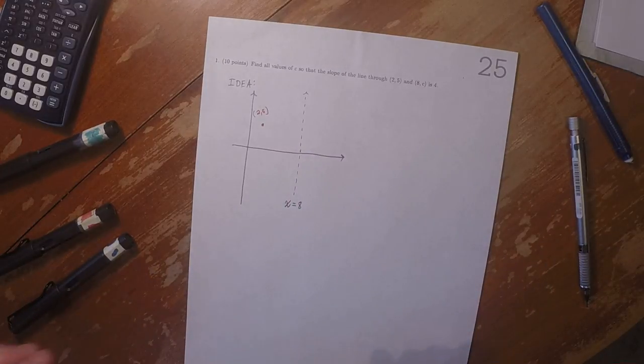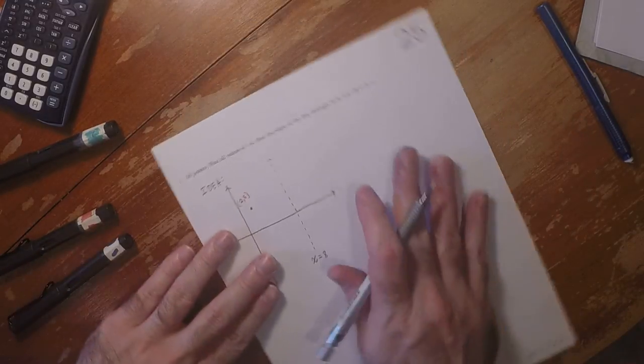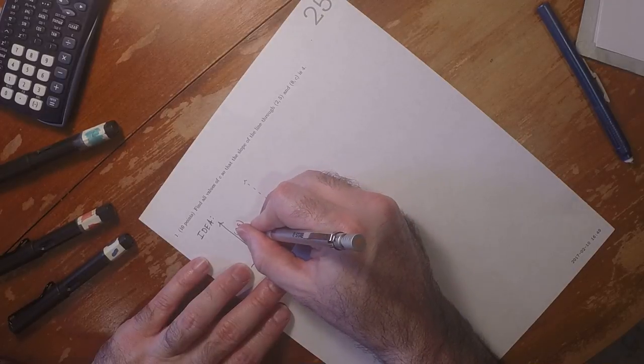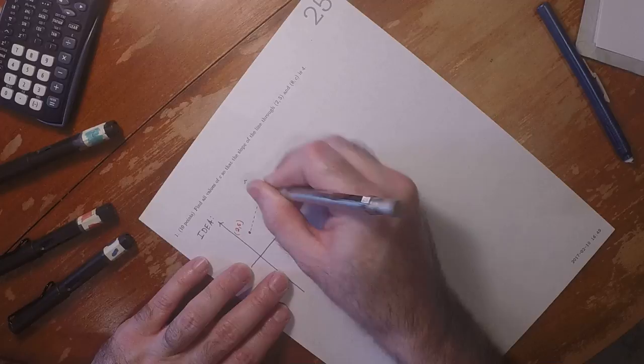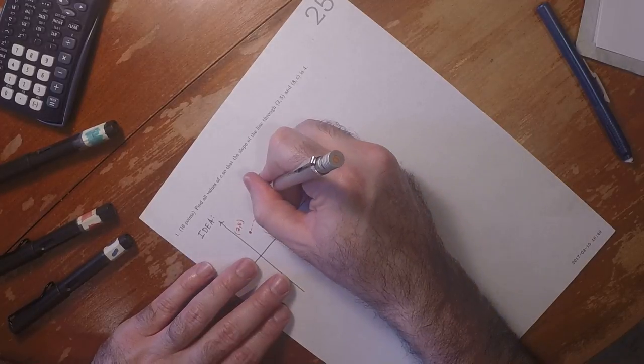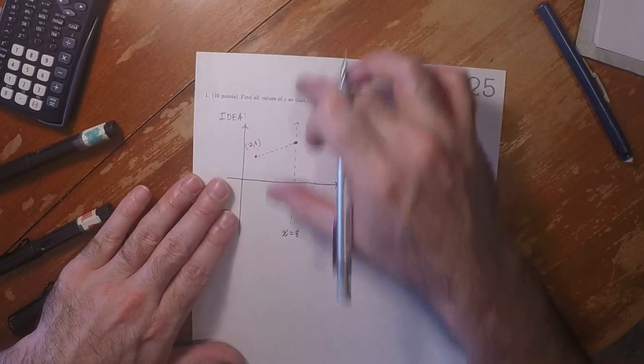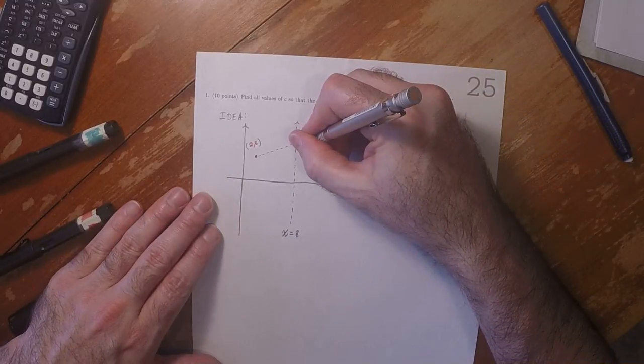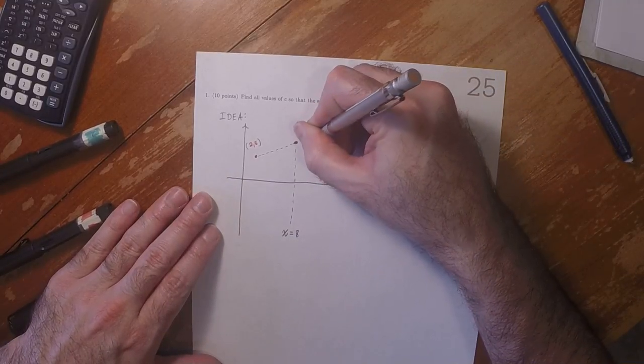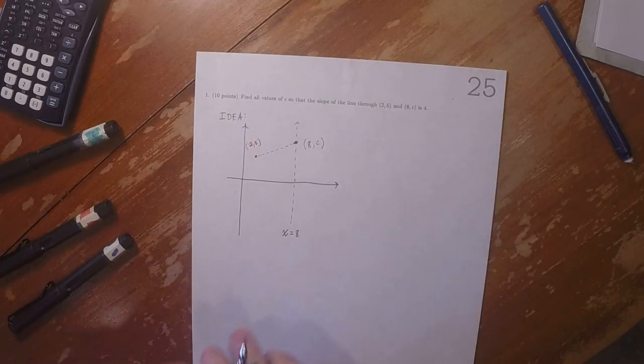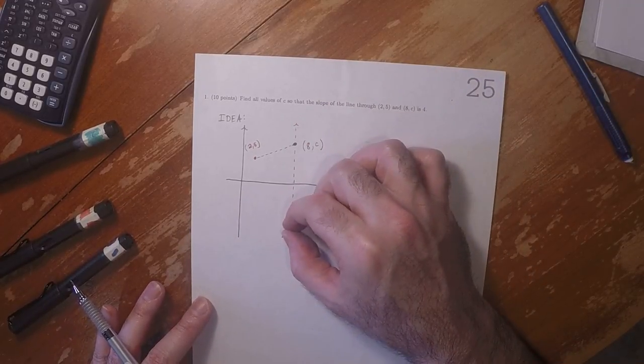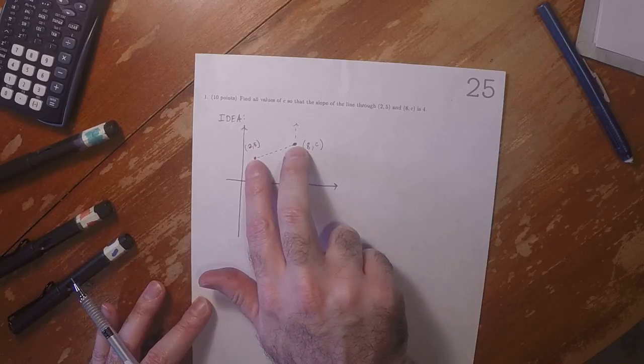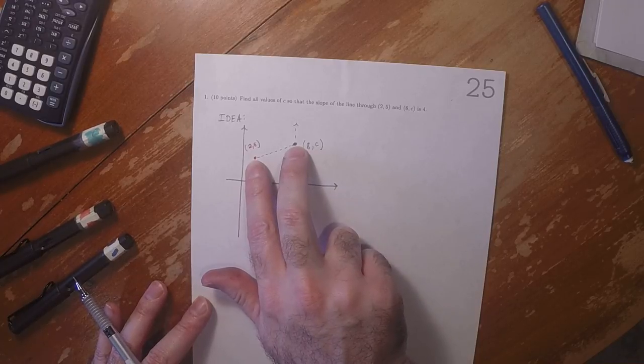And what we want is we want to consider a line. We want to consider this line right here and some point (8,c). And we want to move this point up and down until that line has slope 4.